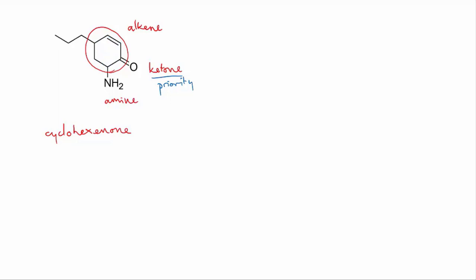If we go anti-clockwise, then we get the alkene on two, the propyl on four, and the amine on six. So two, four, six. So the first option—two, four, five—wins. Lower numbers overall.